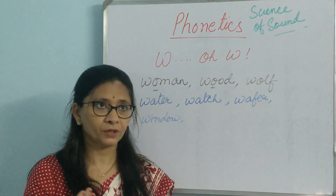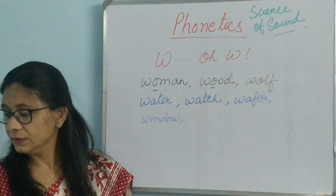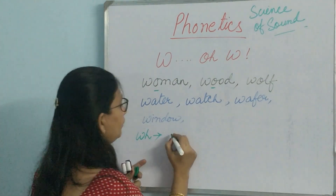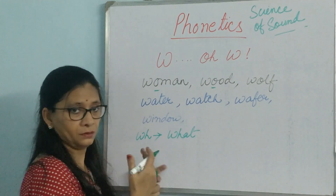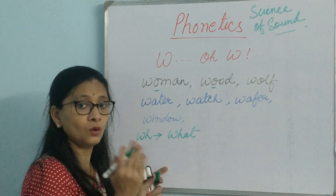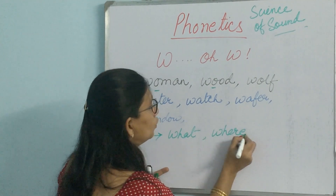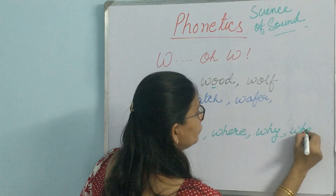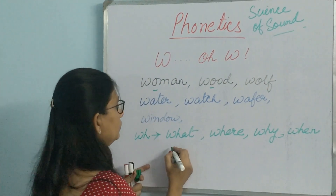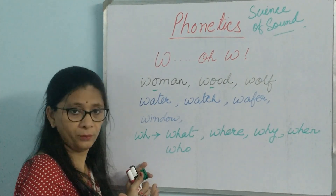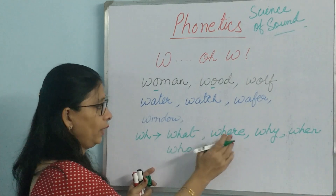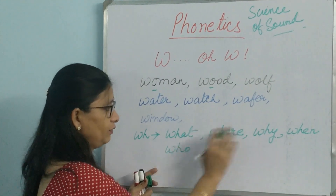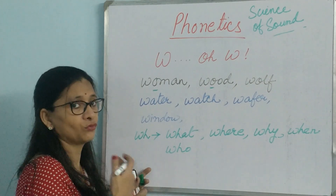Now let us come to WH words. With WH words, again the problem lies here. They have a tendency of saying 'what' as 'vot'. WH words: 'what', 'where', 'why' — WHY is 'why'; WHEN is 'when'; WHO is 'who'. What, where, why, when, who — they all have their own distinct sounds. Everywhere we get the W sound, except in WHO, which starts from H: 'who'.